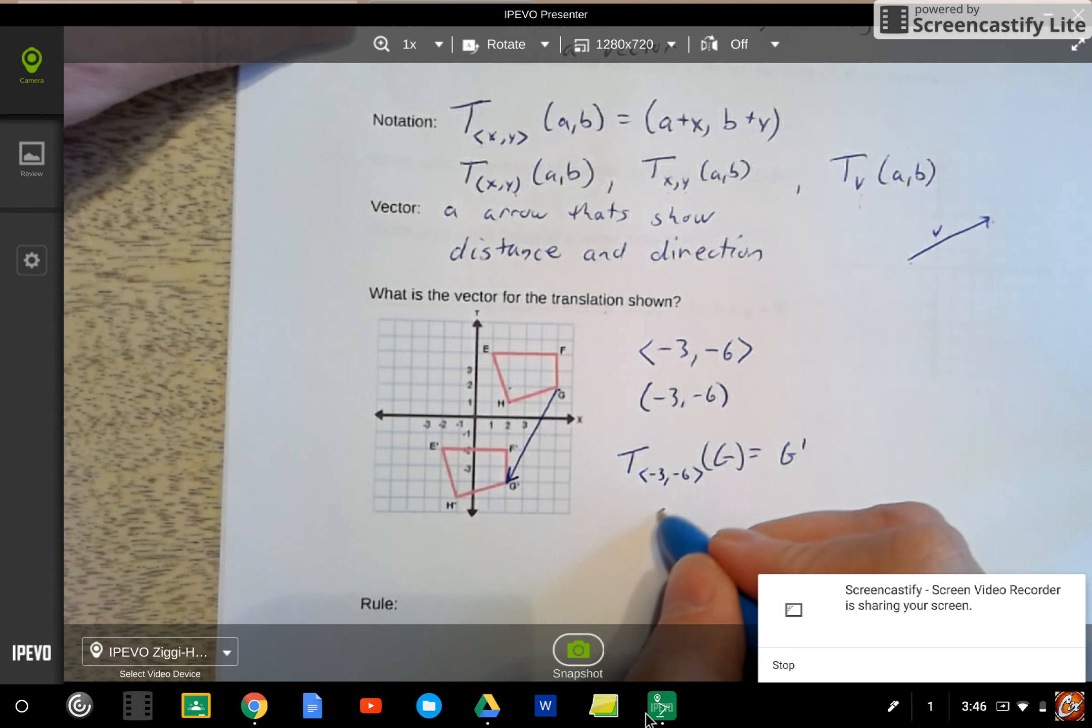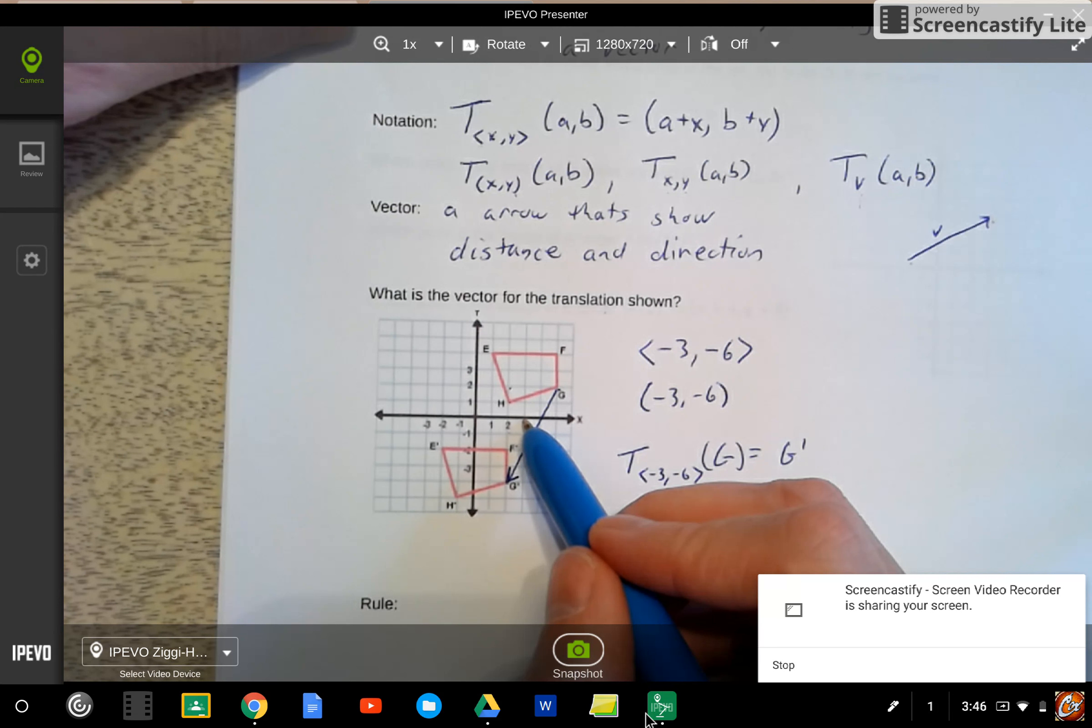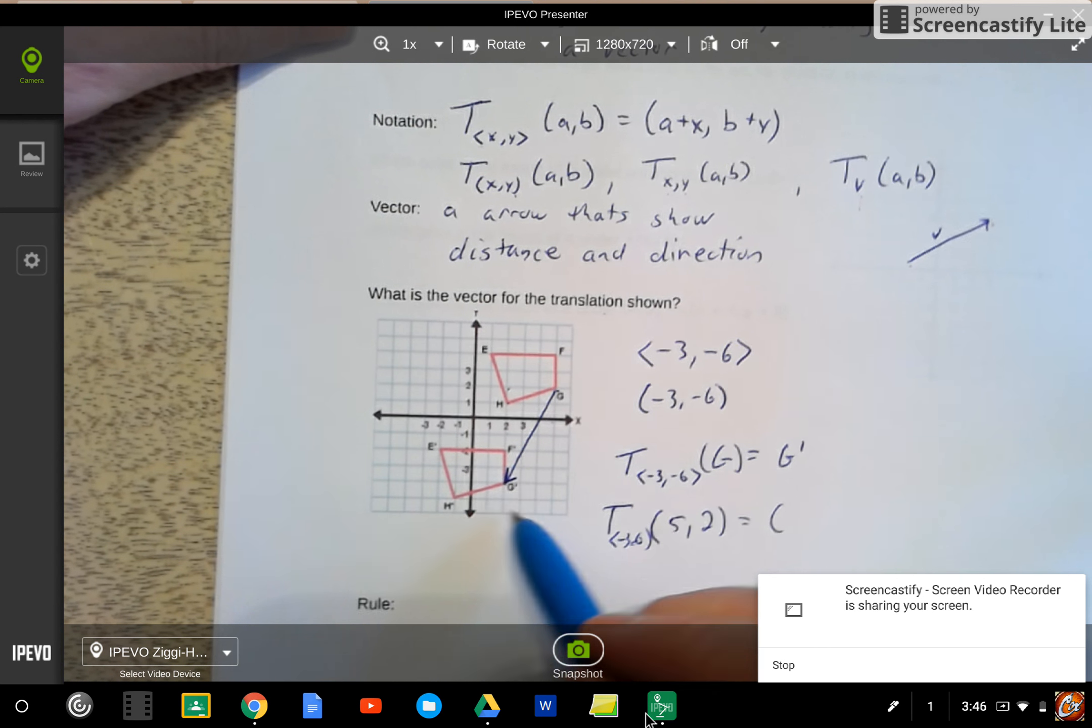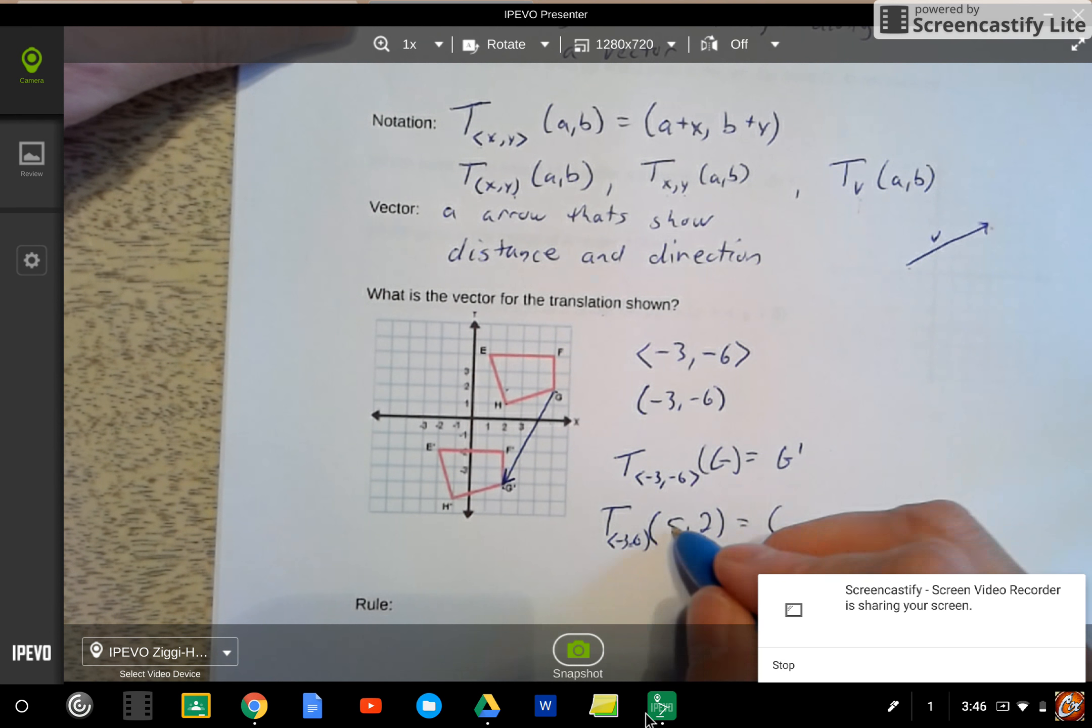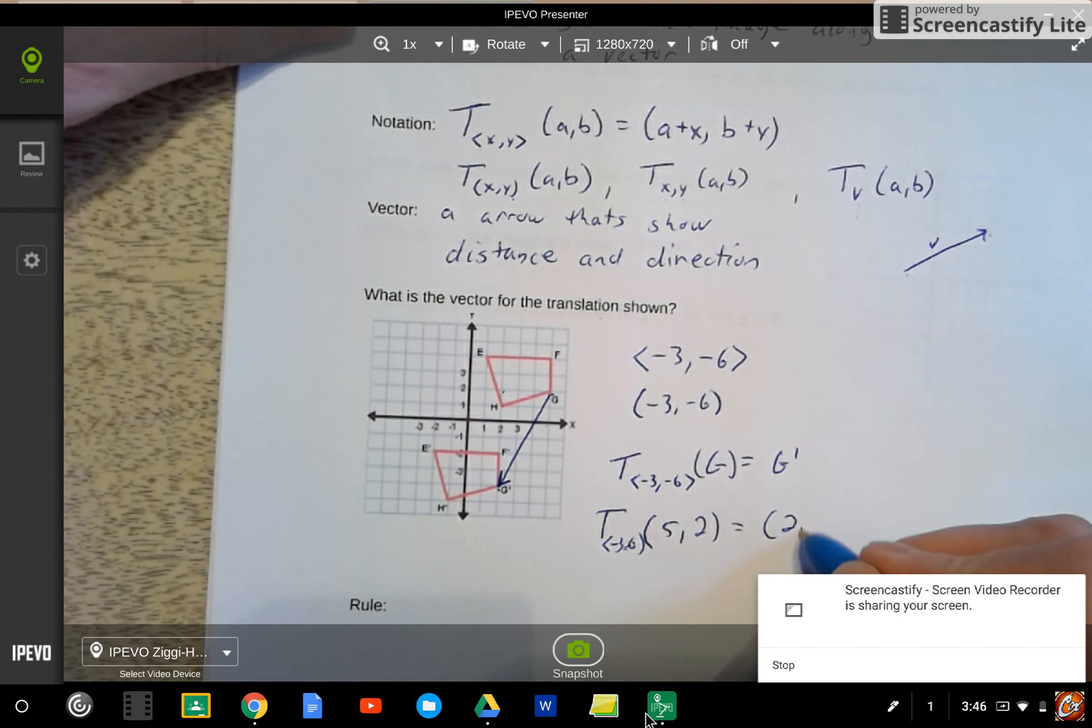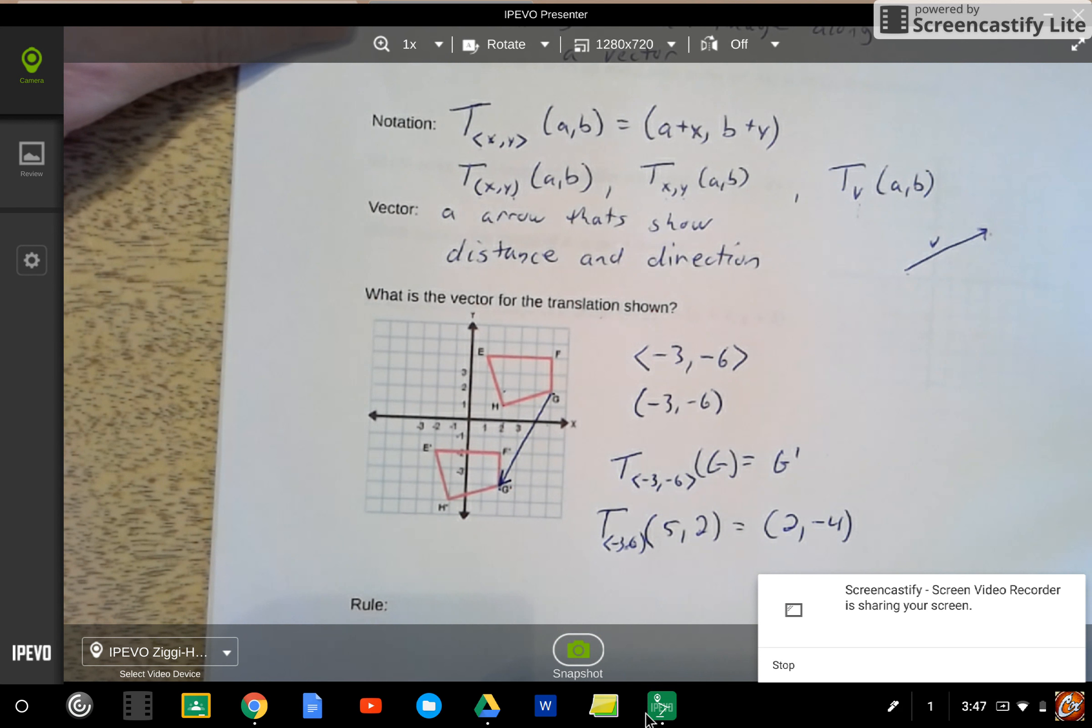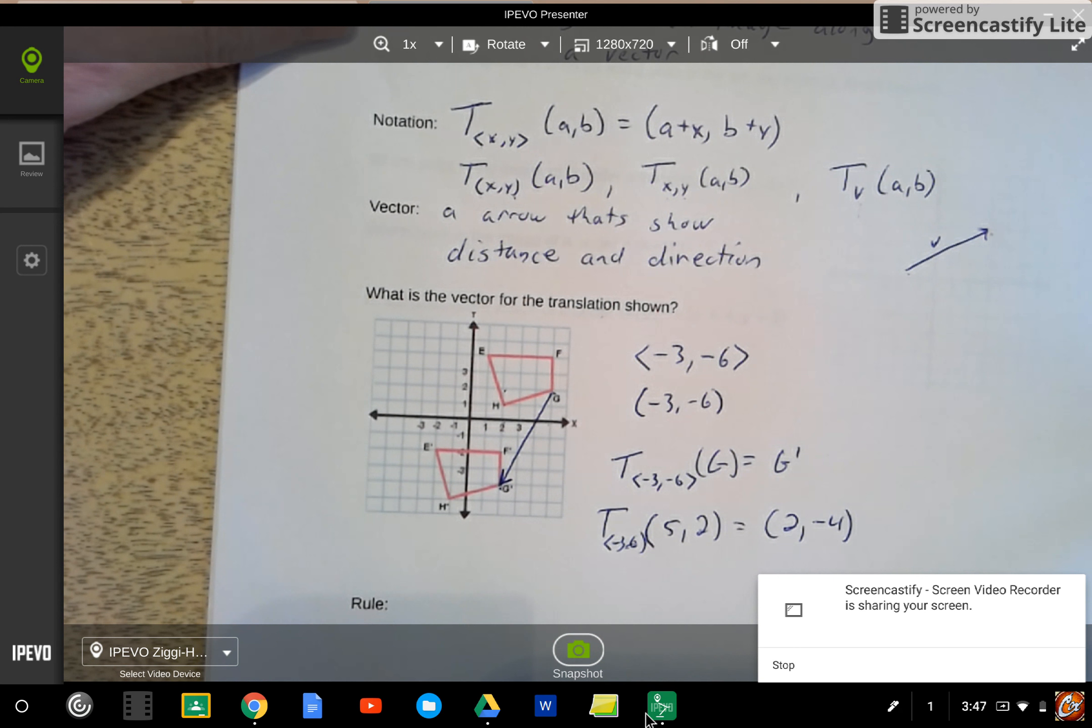So when I put my answer together, maybe I'm going to take a translation of negative 3, negative 6 of point g will give me point g prime. And if you look at where g is, g starts at 3, 4, 5, 2. And after the translation of negative 3, negative 6, it ends up at over here, which is 5 plus a negative 3 is 2. 2 plus a negative 6 is negative 4. And that's where I end up at. So these are really easy to work with and really easy to calculate because all you need to do is add and subtract.